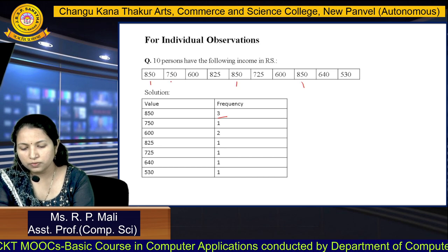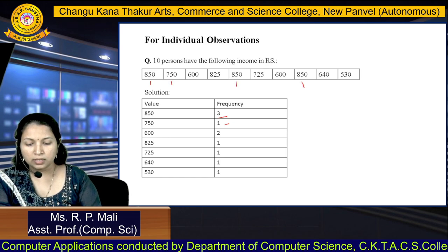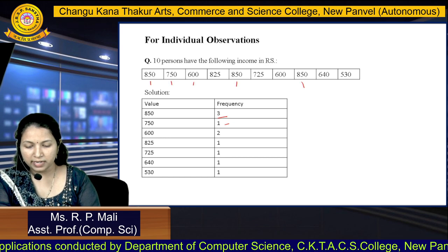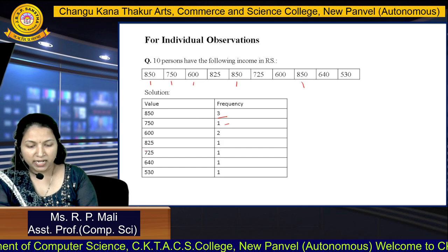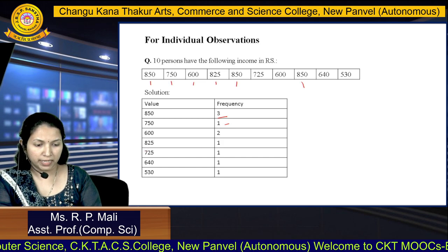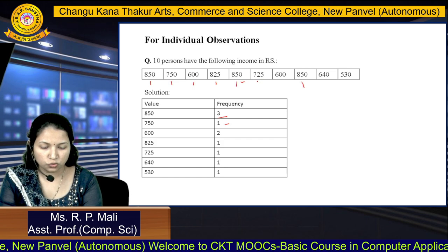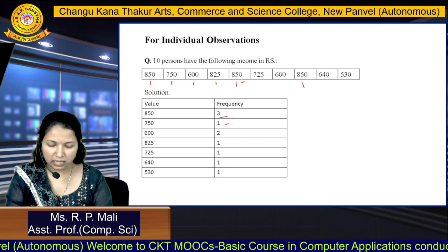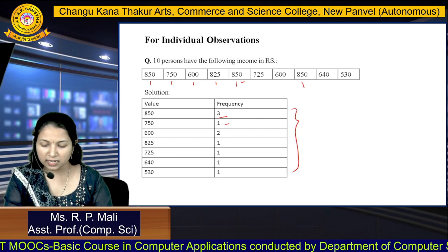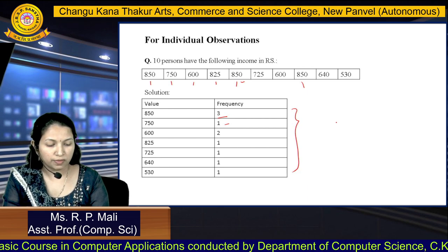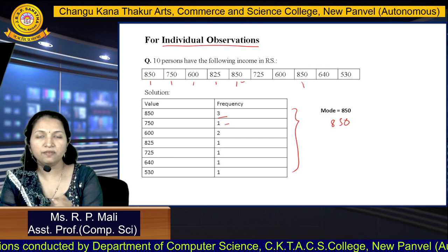Then 750 occurs only once, so frequency is 1. Next, 600 occurs 2 times. Then 825 occurs once, 725 occurs once, 640 occurs once, and 530 occurs once. From this, it is clear that 850 has the highest frequency — 3 times. So 850 is the mode. This is how you find mode for individual observation.